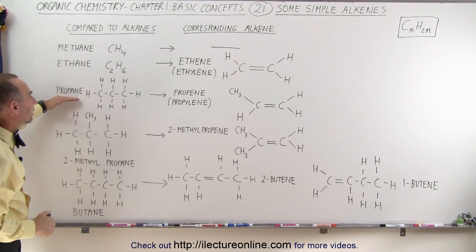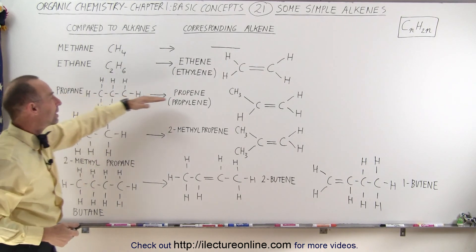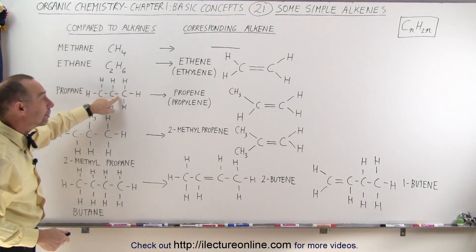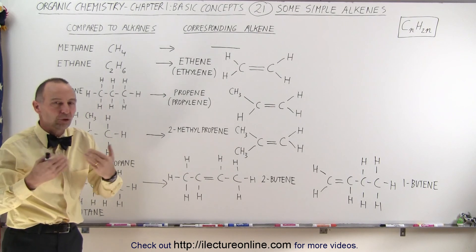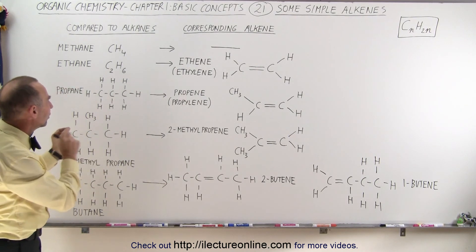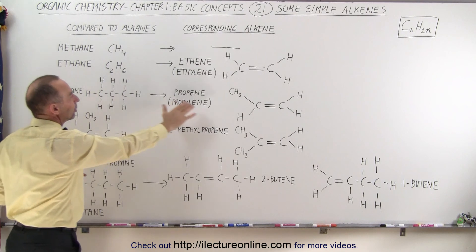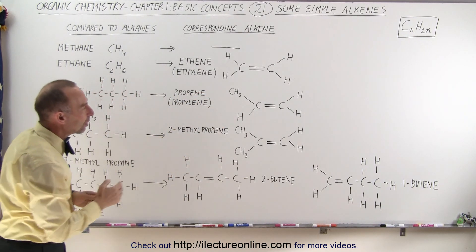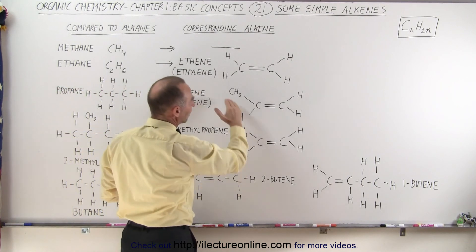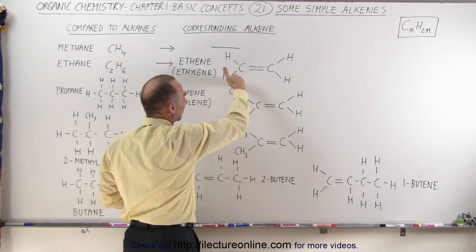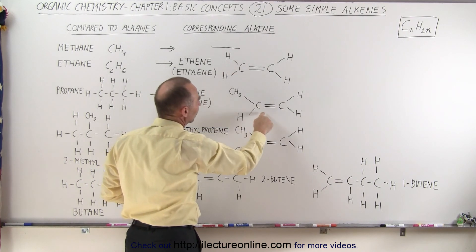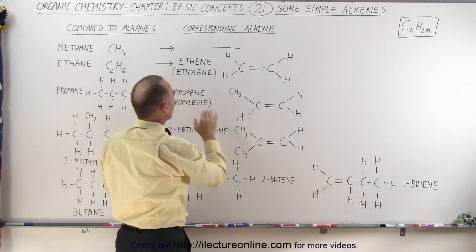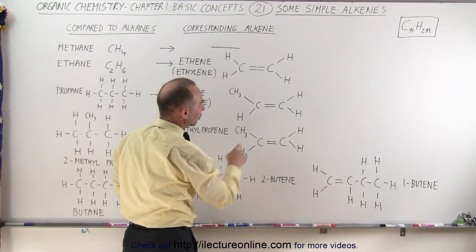The next one is propane, and the equivalent for that is propene. Notice that we can place the double bond at either position, but either way it would look exactly the same, so there are no isomers depending on where we put the bond. It's just one simple equivalent — propene — in the alkene family. Notice that we draw this a little differently now; instead of drawing it linear, we put the CH3 up here so you can see the zigzag formation of the molecule.